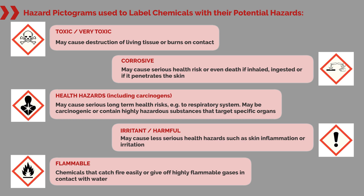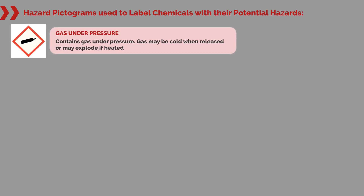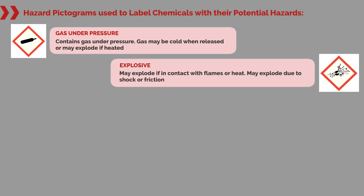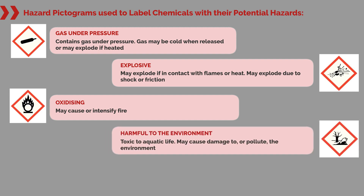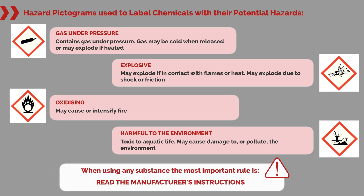Flammable: chemicals that catch fire easily or give off highly flammable gases in contact with water. Gas under pressure: contains gas under pressure; gas may be cold when released or may explode if heated. Explosive: may explode if in contact with flames or heat, or may explode due to shock or friction. Oxidising: may cause or intensify fire. Harmful to the environment: toxic to aquatic life, may cause damage to or pollute the environment. When using any substance, the most important rule is: read the manufacturer's instructions.